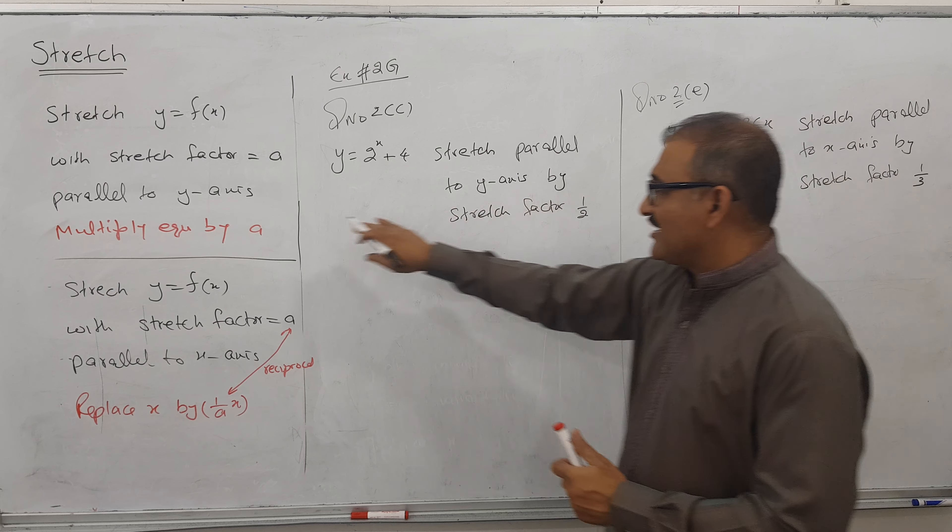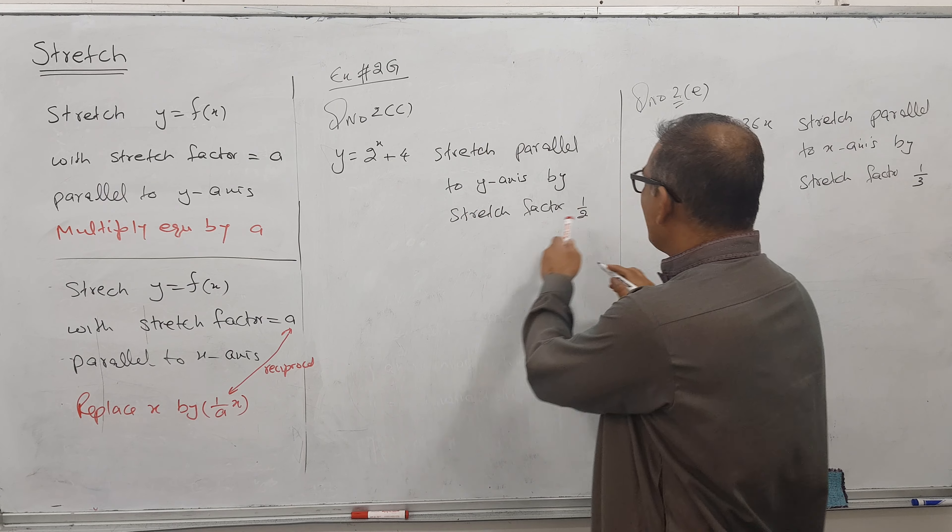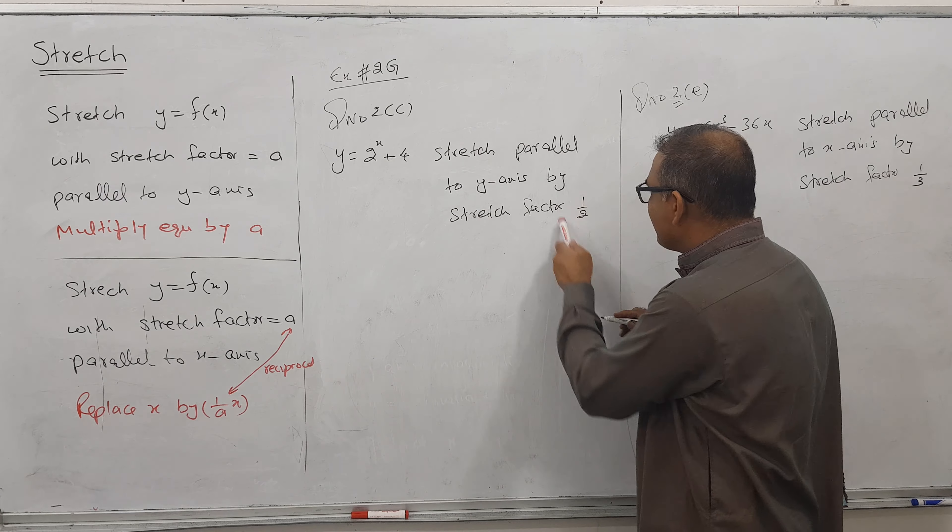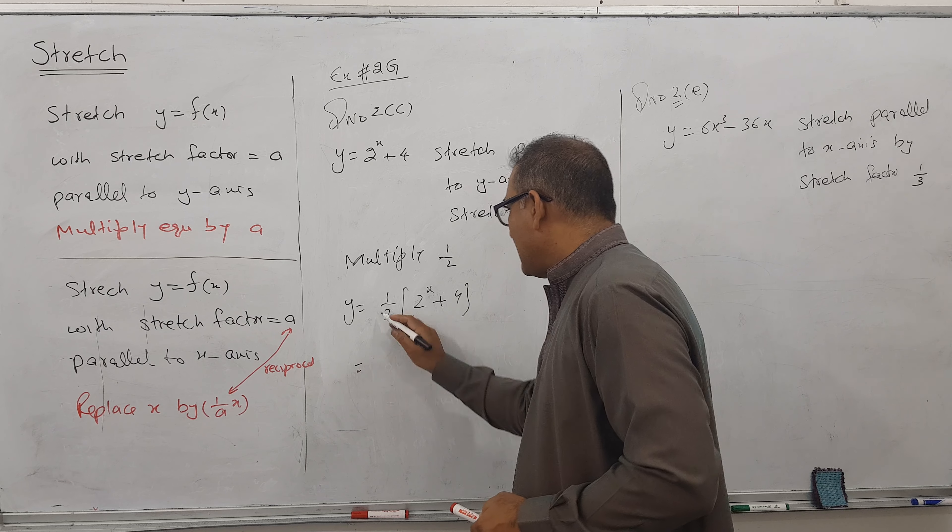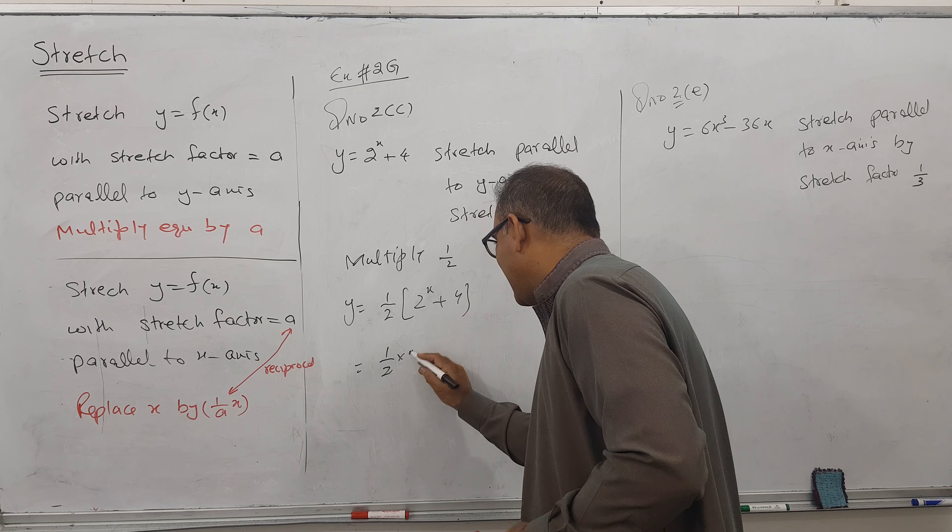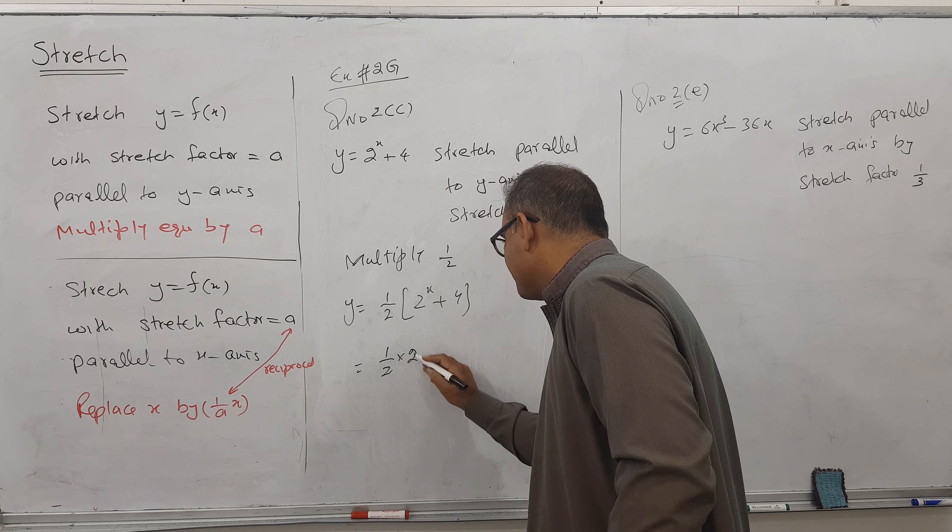For example, this y-axis. So y-axis, you know, multiply by A. And what factor we have? Half. So simply multiply it by half. So y = 1/2(2^x + 4). So 1/2 × 2^x and 1/2 × 4.